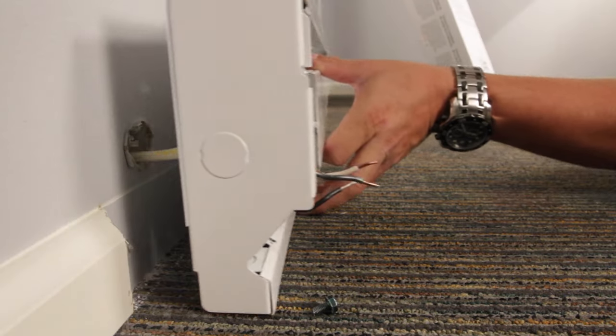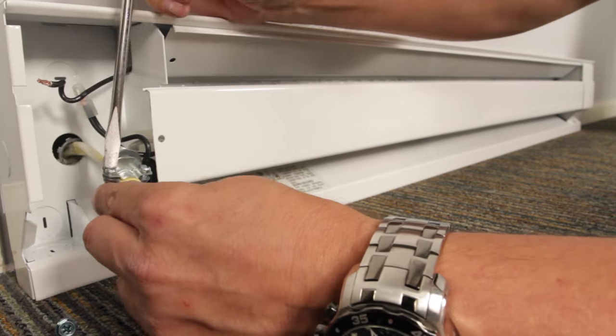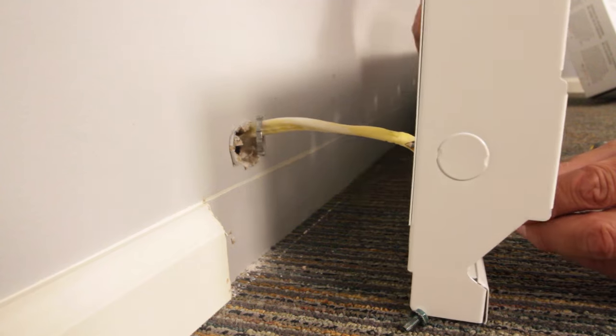If your heater has a strain relief connector, go ahead and disconnect it now. Once you have removed the strain relief connector, carefully feed the wire back through the hole and now your heater is uninstalled.